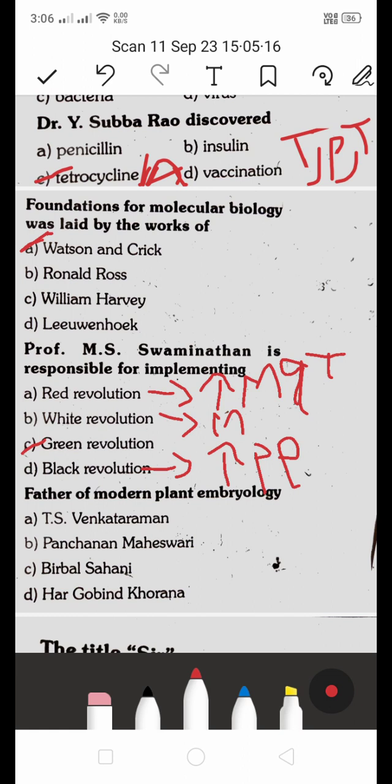The father of modern plant embryology — the options are A. T.S. Venkatramana, B. Panchanana Maheshwari, C. Birbal Sahani, D. Harugomindu Quran. The right answer is B — Panchanana Maheshwari is the father of modern plant embryology.